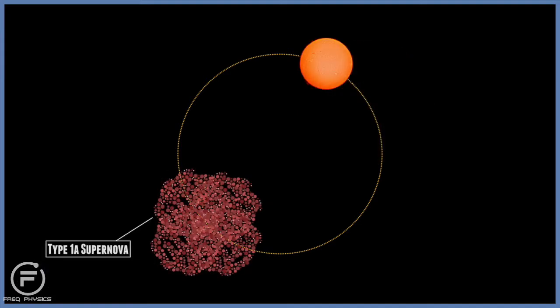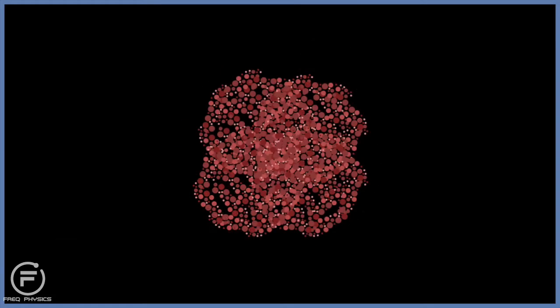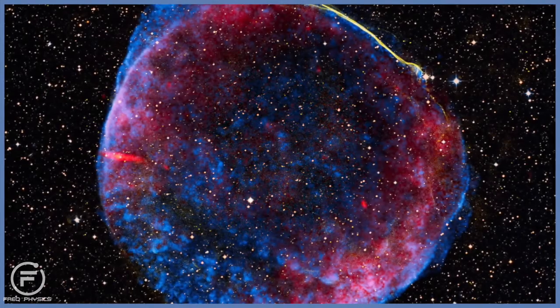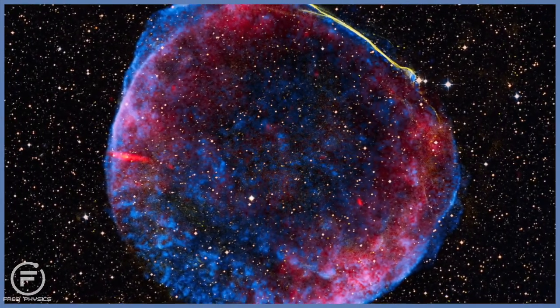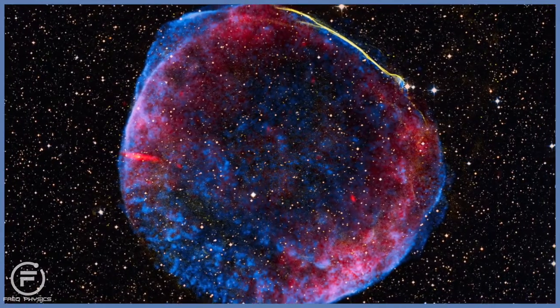This is what's known as a type 1a supernova. This always occurs at this critical mass. This critical mass is about 1.4 times the mass of our Sun, and therefore the brightness of the supernova is very predictable.